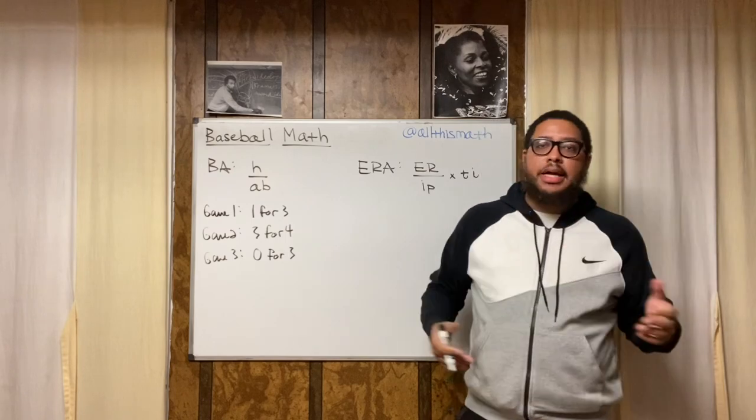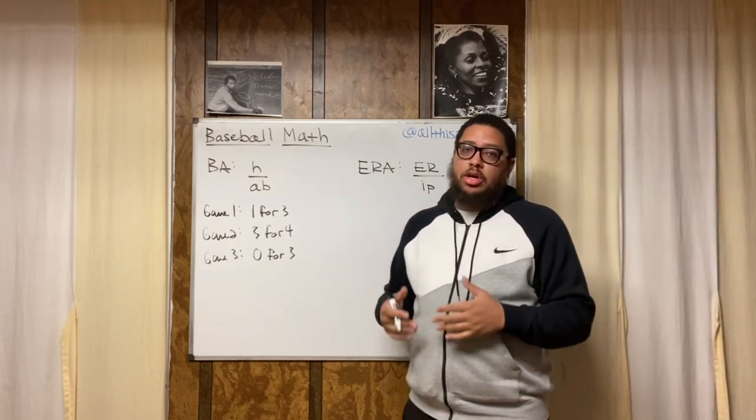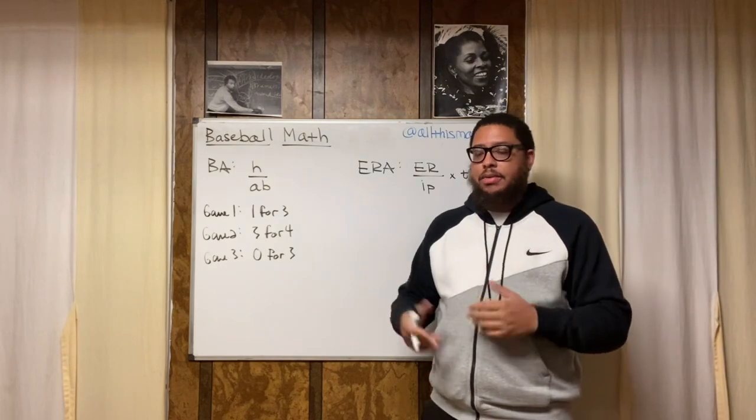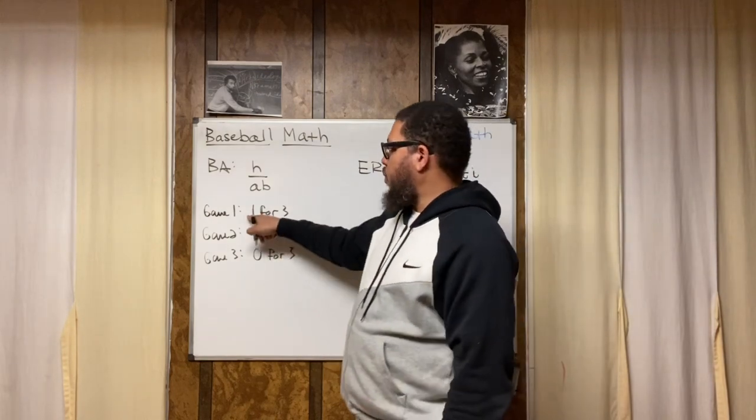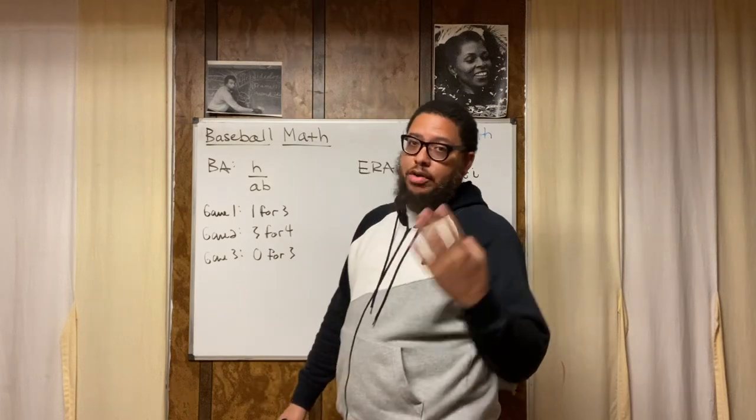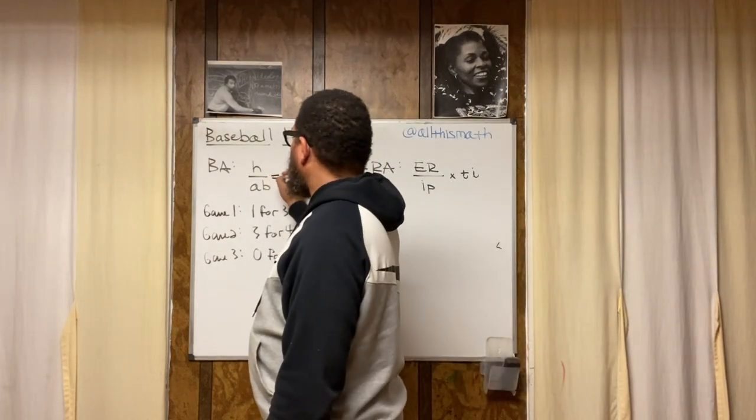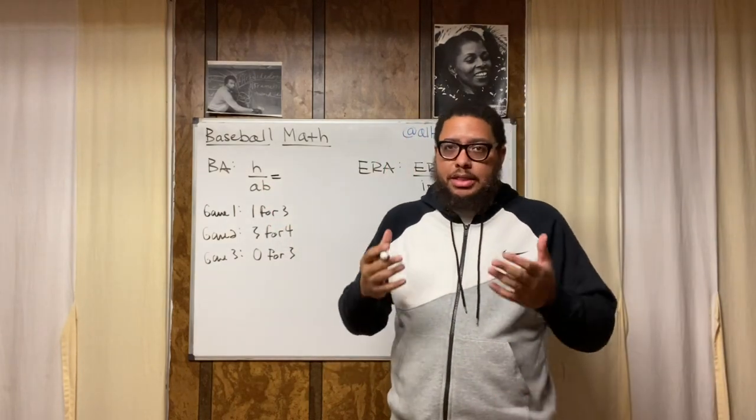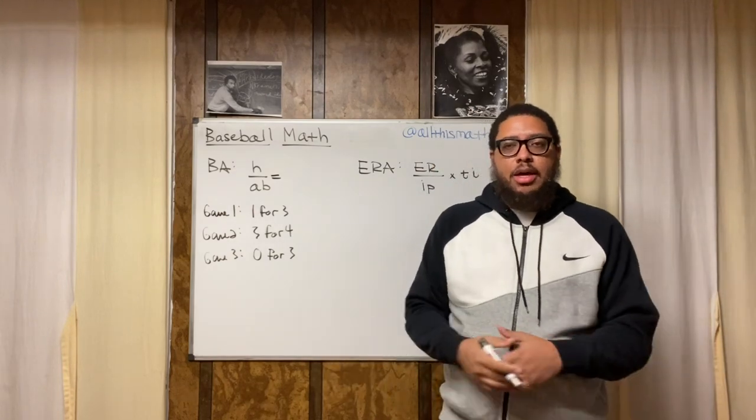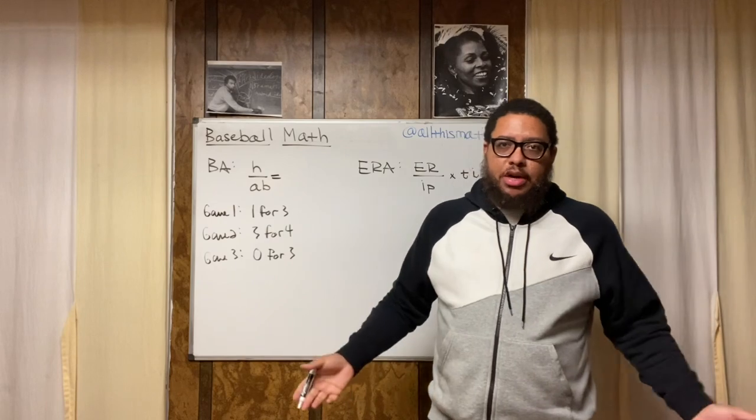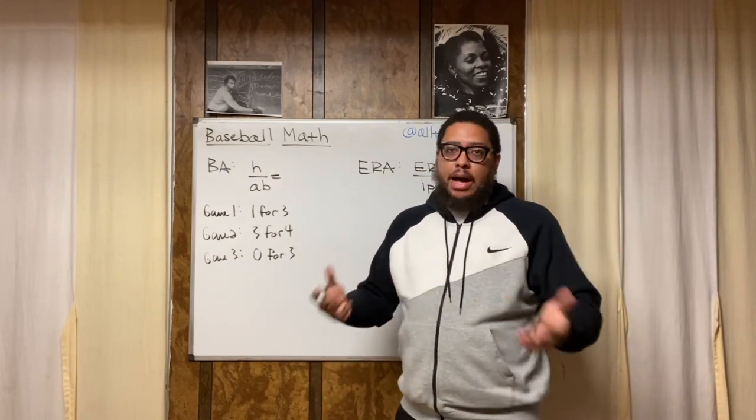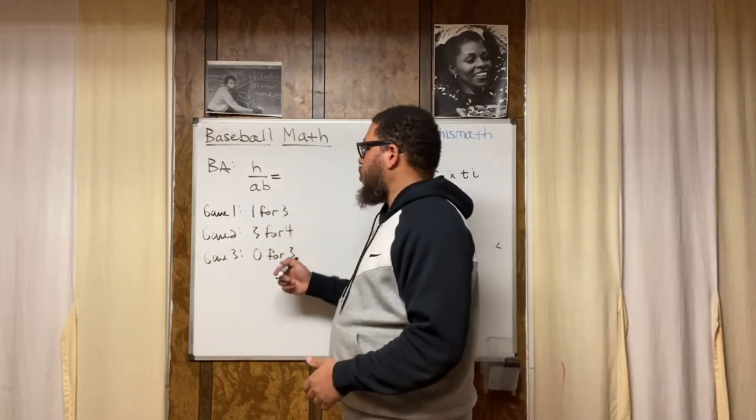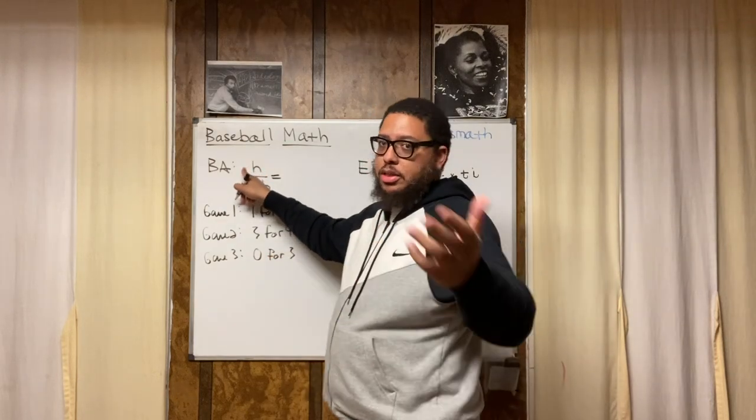So what you would do in order to calculate your batting average is you basically take all your hits, you want to add them up. The sum of your hits. So sum means addition. So you add up all your hits. So here we got one hit plus three hits plus zero hits. All together, that's four hits. So in this fraction, hits over at-bats, you're going to replace the variable. This is exactly doing algebra, even if it doesn't seem like it, even if it's related to something that we find fun like baseball. It still is algebra.